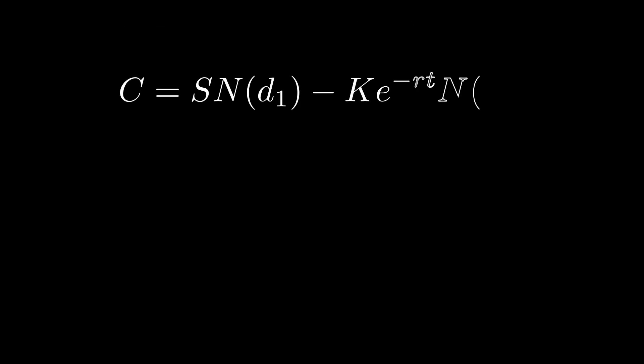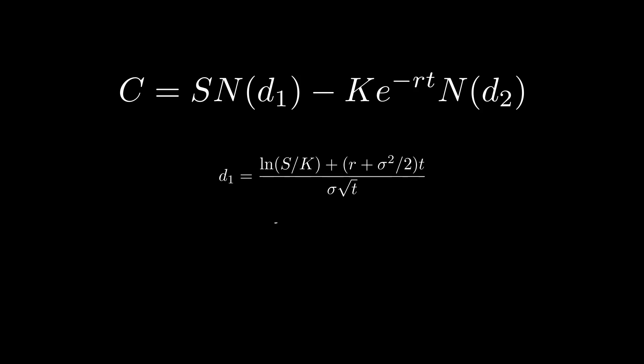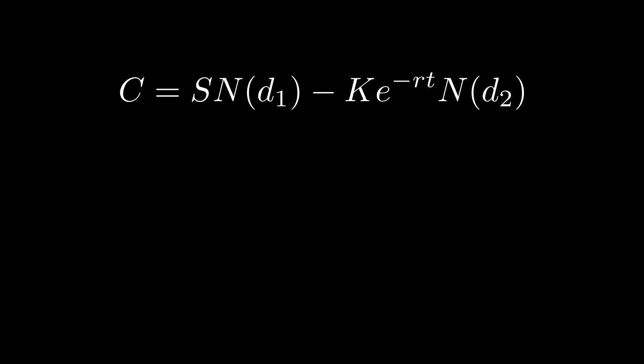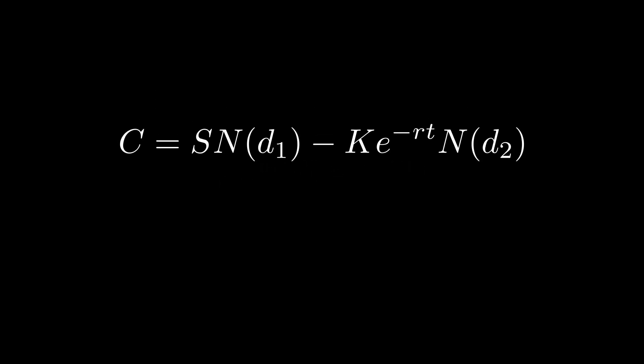To actually calculate these effects — like the Greeks and the call price — the equation needs to be solved. Fortunately, that's already been done for us, and the solution is what we now know as the famous Black-Scholes model. Looking at it, it might still seem a bit intimidating, but let's break it down step by step.